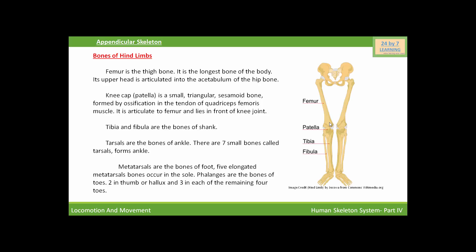This is the diagram of the bones of the hind limb. This is the thigh bone, that we call the femur. This is the kneecap, that we call the patella. These are the bones of the shank, that we call the tibia and fibula. These are the bones of the ankle, that we call the tarsals. These are the bones of the sole, that we call the metatarsals. And these are the bones of the toes, that we call the phalanges.